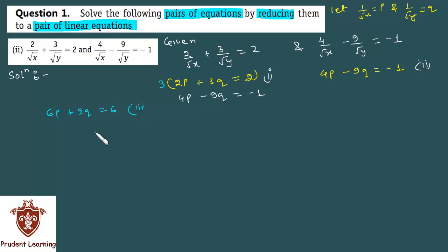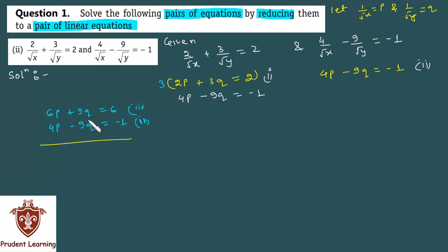I will copy the second equation as it is: 4p minus 9q is equal to minus 1. The coefficient of q is the same magnitude in both equations, and the signs are opposite, so we simply add the two equations to eliminate q.